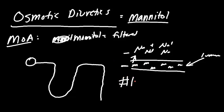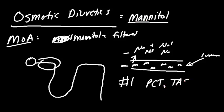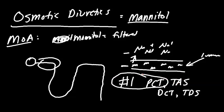The number one location of action is the proximal convoluted tubule — that's where most reabsorption takes place. Mannitol also acts at all the water-permeable segments of the nephron: the proximal convoluted tubule, the thick ascending segment, the distal collecting tubule, and the thin descending segment.